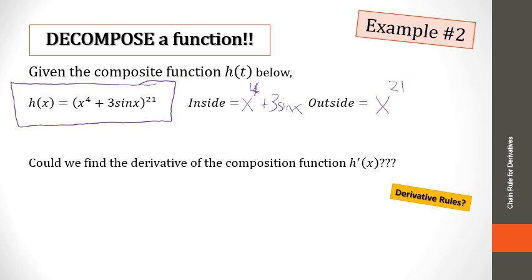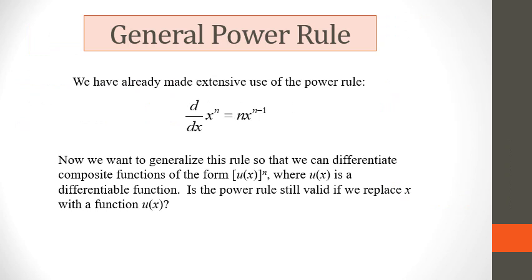Now our next question is: how do we find the derivative of a composition function? Do we just do the power rule part, or do we need to look at everything on the inside too? We're going to look at whether the power rule is still valid if we replace X with another function — in other words, if we have a composition of functions, will it still work?